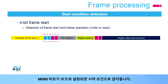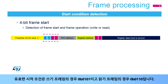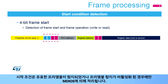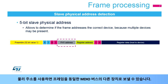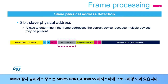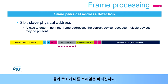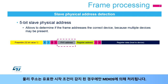A start condition is detected when an MDIO bit is set to 0. Valid start conditions are 0101 for a write frame and 0110 for a read frame. Start condition errors are reported by the SERF bit. The start condition will be processed by the MDIO-S only when a valid preamble has been detected or when preamble detection has been disabled. The physical address allows frames to be sent to different devices on the same MDIO bus.